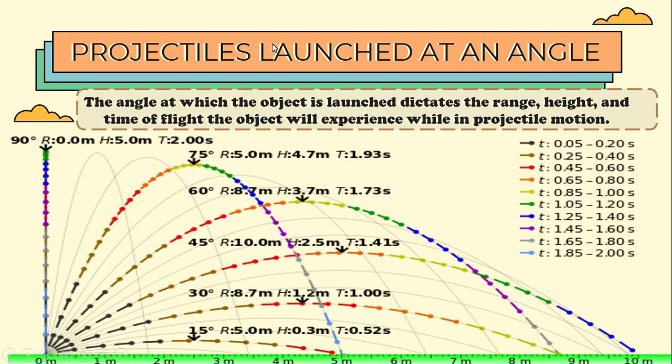The angle at which the object is launched dictates the range, height, and time of flight the object will experience while in projectile motion. Let us analyze the projection of an object in different angle. At 15 degrees, the range may reach up to 5 meters, at the height of 0.3 meter, at a total time of 0.52 seconds. If we raise the projection up to 30 degrees, the range will also increase up to 8.7 meters, with a maximum height of 1.2 meter at the total time of 1 second.